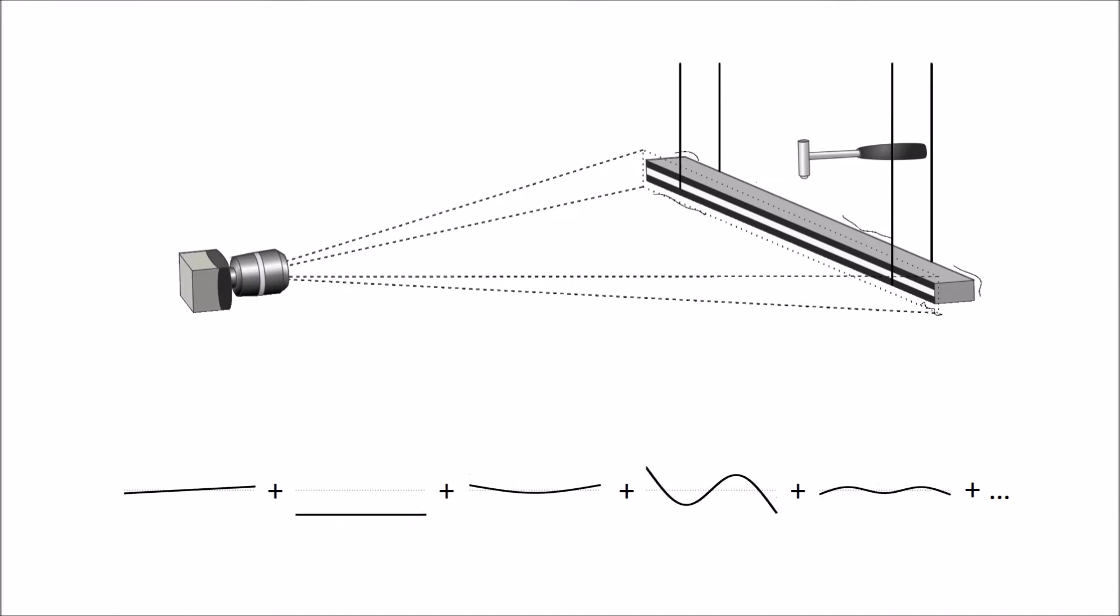The displacements caused by vibrations are very small, ranging in microns for higher kHz frequencies. Such small vibrations seem invisible when observing a slowed-down high-speed video of the vibrating structure.